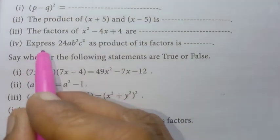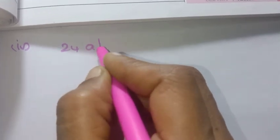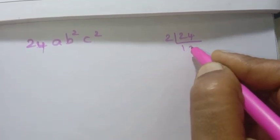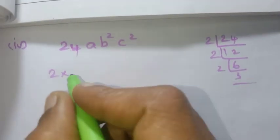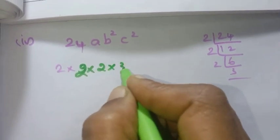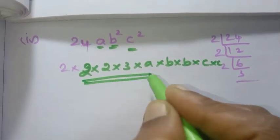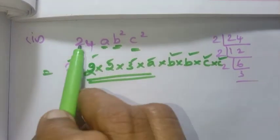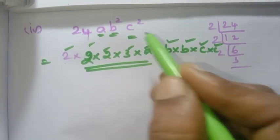Fourth: express 24 a b squared c squared as a product of its factors. We write 24 as 2 into 2 into 2 into 3. Then a b squared is a into b into b, and c squared is c into c. So the factors are 2, 2, 2, 3, a, b, b, c, c.